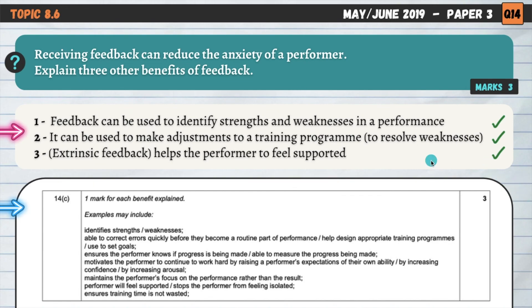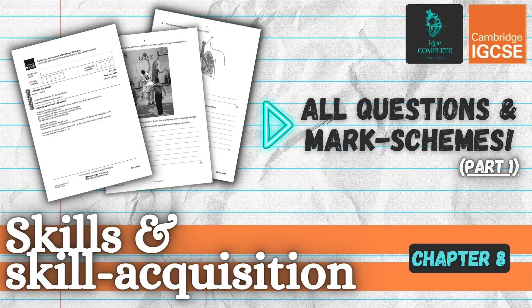That was the last question on Chapter 8 for this session — 16 questions from only three papers in the May-June 2019 series, meaning there are five or six questions on skills and skill acquisition per paper. It's quite highly represented in your exam, so take your time, go back over these questions, get familiar with the mark schemes, and watch the short summary videos if you struggle. Like and subscribe if you enjoyed this video, and I'll see you next time for 12 questions on Chapter 9, Psychology.